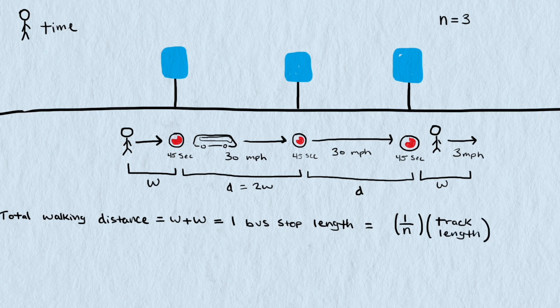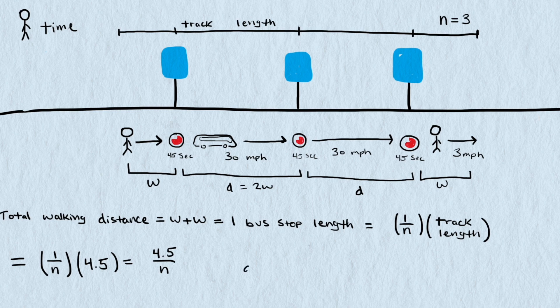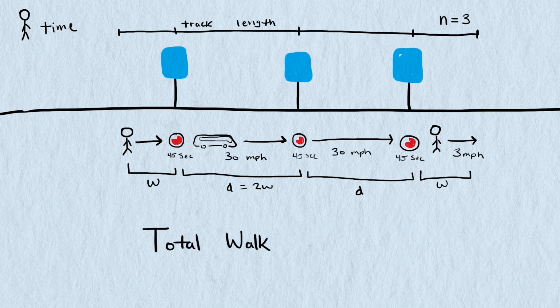For n stops the pattern will be the same. The walking distance will be equal to the distance between two stops and that can be calculated by multiplying 1 over n times the total distance. So in our case 4.5 divided by n. And since we want walking time, not walking distance, we divide the walking distance we just calculated by the walking rate. So 4.5 miles divided by n divided by 3 miles an hour.